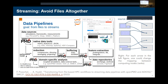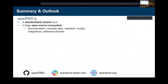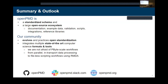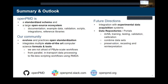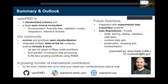To summarize: OpenPMD is a standardized schema for particle and mesh-based data. We publish and develop it as an open-source ecosystem on GitHub — starting with documentation, example data, validation scripts, reference libraries, and integrations. Our community evolves these practices through open-source development, leveraging heavily hierarchical data formats and specifically HDF5. In future directions, we are integrating deeper with experimental data systems, as data rates in advanced accelerator research go up. Our real goal is to establish open data repositories enabling meta-studies over many experiments. Please feel free to reach out, benchmark us, and let us know what you find.